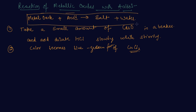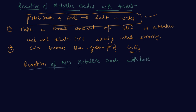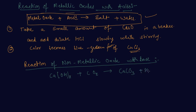Now we will discuss the reaction of non-metallic oxides with a base. Consider the reaction between carbon dioxide and calcium hydroxide. Carbon dioxide (a non-metallic oxide) reacts with calcium hydroxide (a base) to produce a salt and water — specifically CaCO₃ plus water is formed. This is similar to the reaction between a base and an acid.